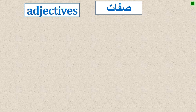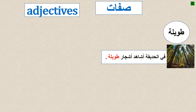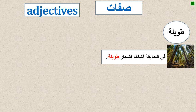Now we will do the grammar - صفات, adjectives. طويلة means 'long' or 'tall.' For example: في الحديقة وشاهد أشجار طويلة. In Arabic, the adjective comes after the noun - not like in English where you say 'beautiful car.' In Arabic, you say the noun first: سيارة, then the adjective. The adjective comes after the noun.